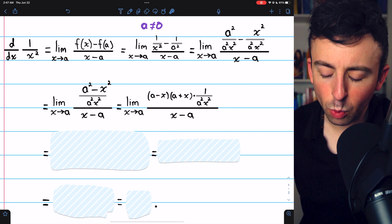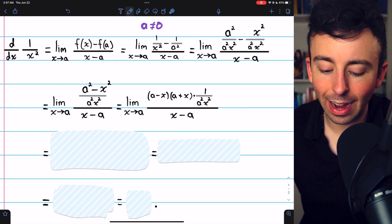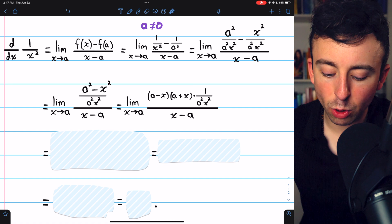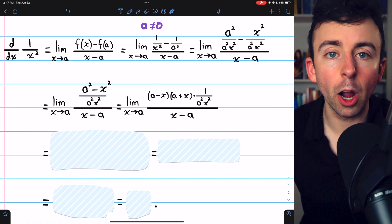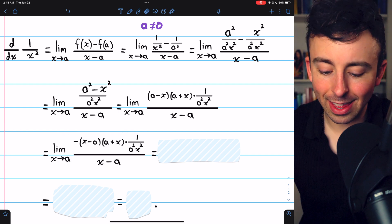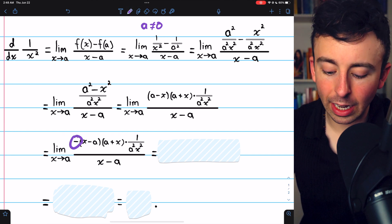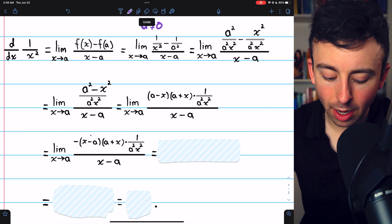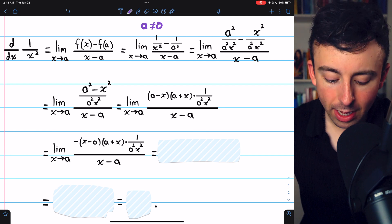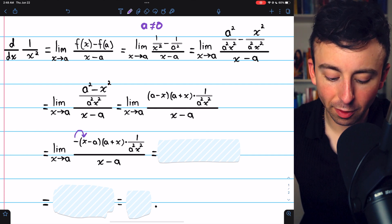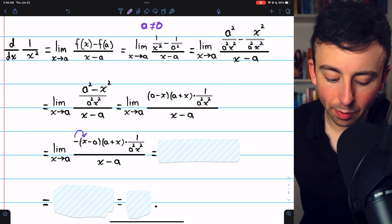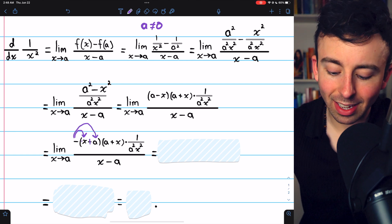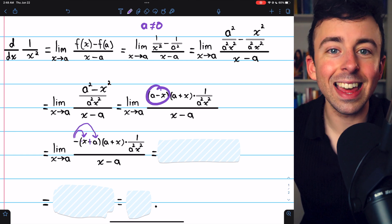Now the a minus x, we can almost cancel out with the x minus a. We just need to take out a negative so that these things will flip around. And that looks like this. We just take out a negative and a minus x becomes x minus a. You can see if we distributed this negative back through, we'd get negative x and then plus a.